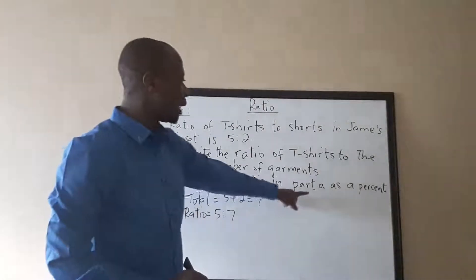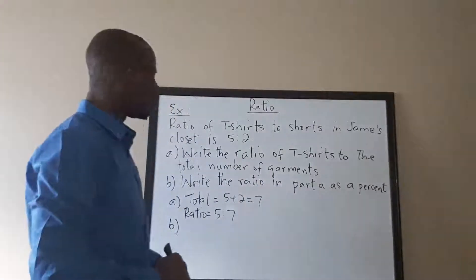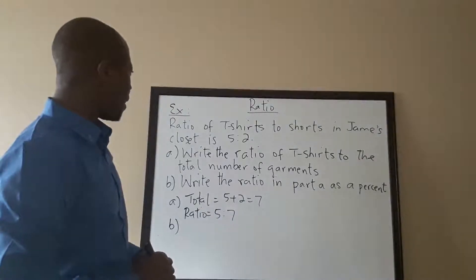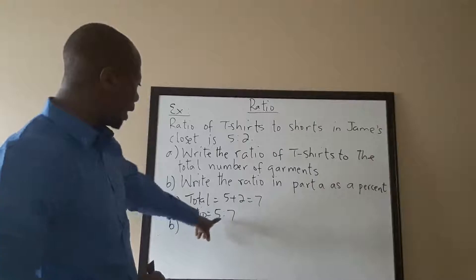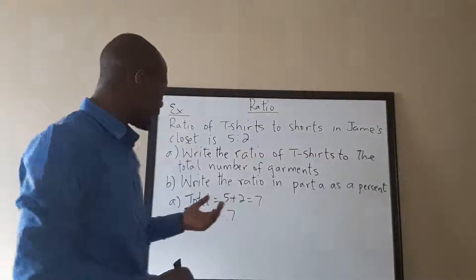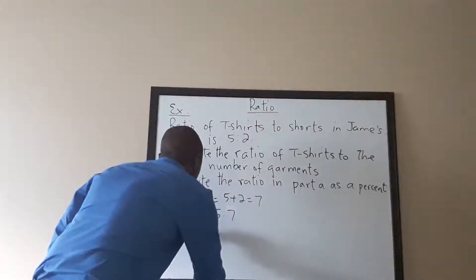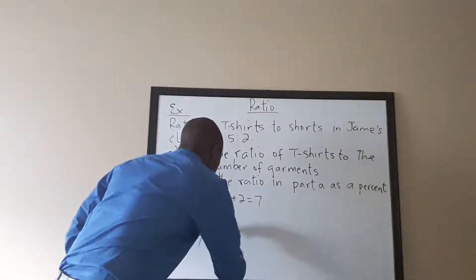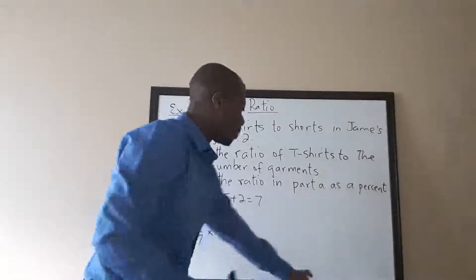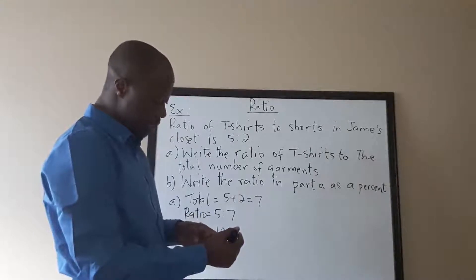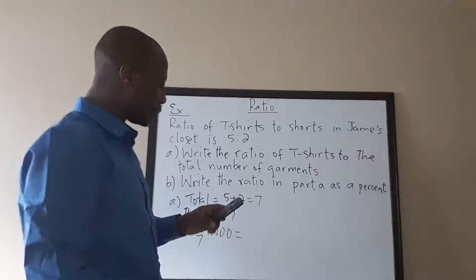Part B says to write the ratio from part A as a percent. The ratio from part A is 5:7. We convert to a fraction — 5 over 7 — then multiply by 100. Plugging into the calculator: 5 times 100 divided by 7 gives approximately 71.4%.